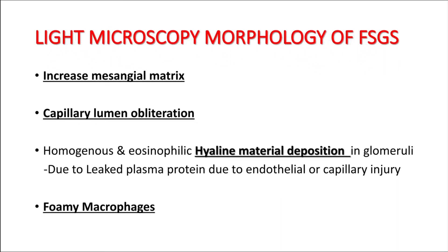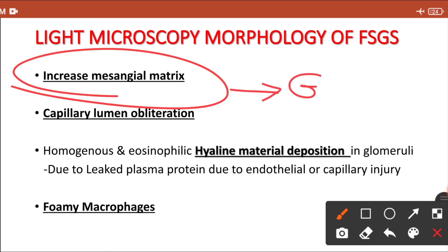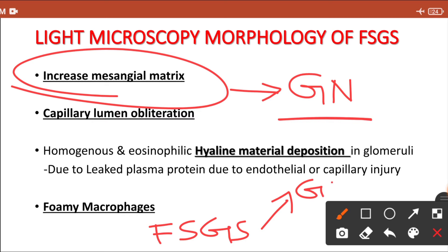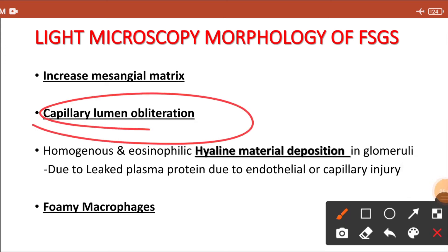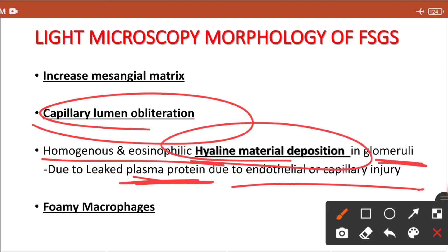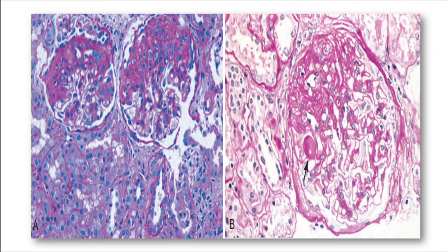In light microscopic morphology of FSGS, kidney biopsy commonly shows increased mesangial matrix due to glomerulonephritis. The patient can present with glomerulonephritis or nephrotic syndrome. If glomerulonephritis is present, there is capillary lumen obliteration due to capillary damage. Because of endothelial or GBM damage there will be leakage of plasma protein and hyaline material into the glomerulus, showing homogeneous eosinophilic hyaline material deposition. Macrophages, as chronic inflammatory cells, can also be seen.